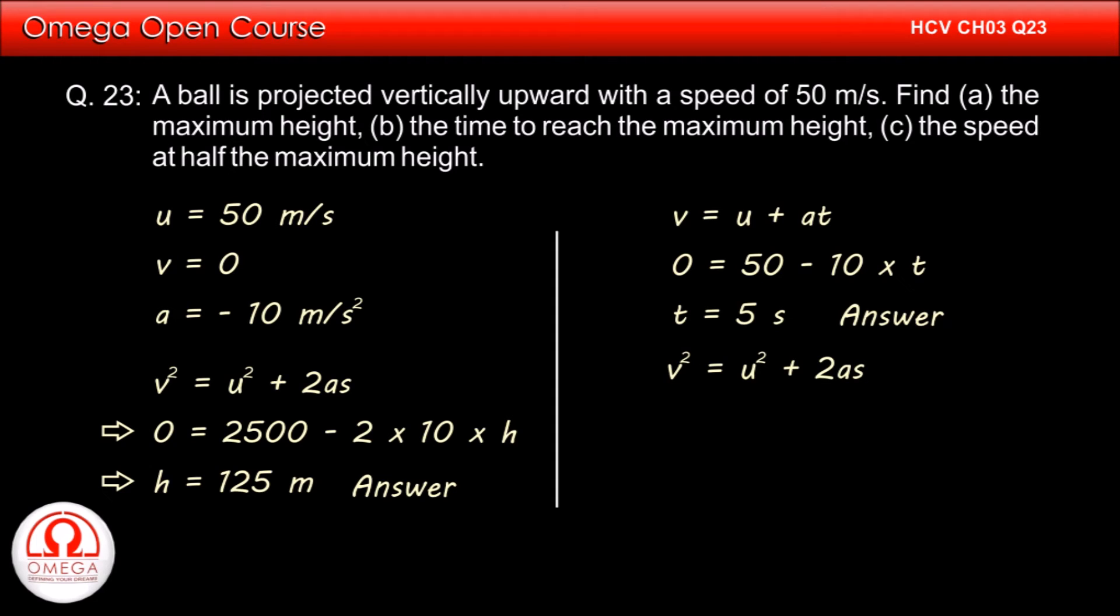From the third equation of Newton's equation of motion, we have v² = u² + 2as. If we put half the maximum height attained by the ball in place of s, then we will get the speed of the ball at half the maximum height.